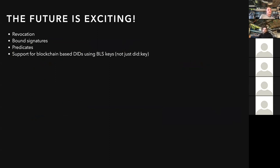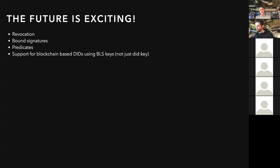For the future, we really want to have revocation, bound signatures, predicates, and support for blockchain — not just DID Key but more DID method support. We've only implemented a subset so far. I think the session held next by Tobias and Brent about next steps for BBS will be great — we can do this now, so how do we get to the next steps?